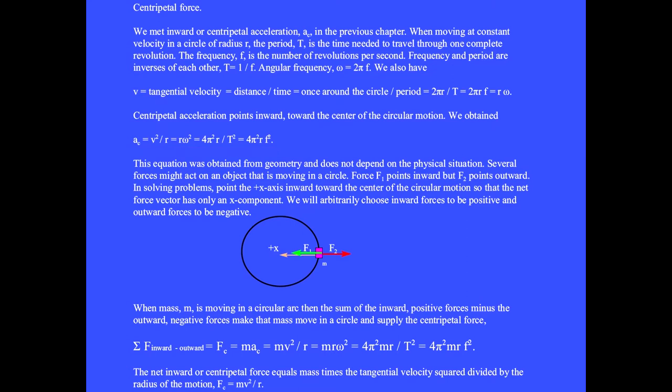This equation was obtained from geometry and does not depend on the physical situation. Several forces might act on an object that is moving in a circle. Here, the green force F1 points inward, but the red force F2 points outward. In solving problems, point the positive x-axis inward toward the center of the circular motion, so that the net force vector has only an x component. We will arbitrarily choose inward forces to be positive and outward forces to be negative.